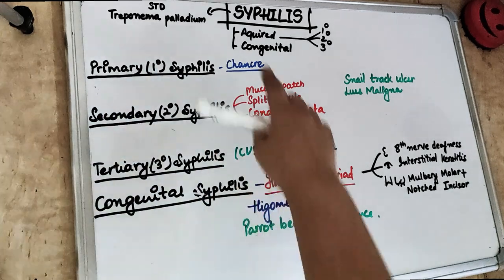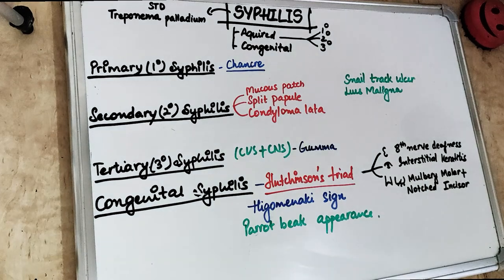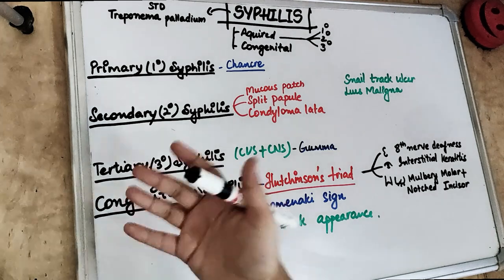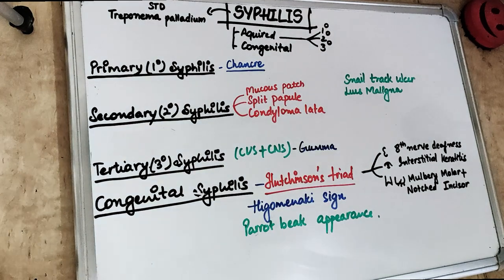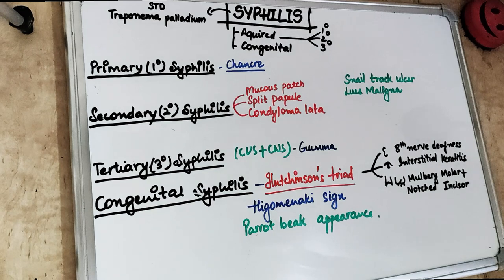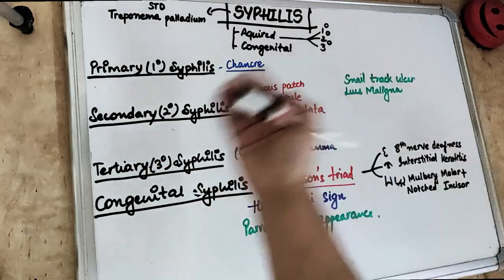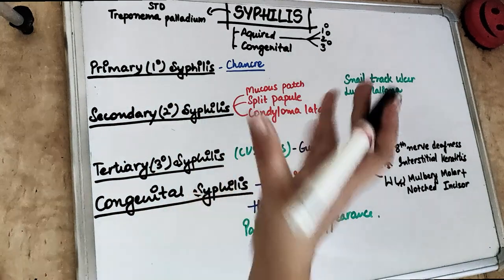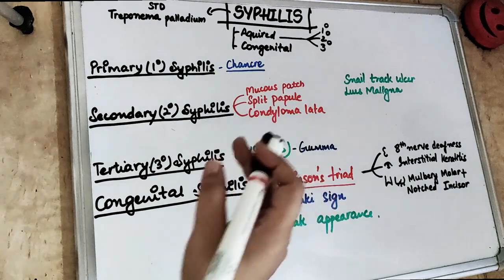Talking about primary syphilis — we have acquired syphilis, which can be primary, secondary, as well as tertiary. In primary syphilis, there are chancres at the site of inoculation. When it is sexually transmitted, these chancres may develop at the penis in males and in the uvula in females. The chancres can also be oral chancres — dull red color macules or papules which can later be eroded or ulcerated.